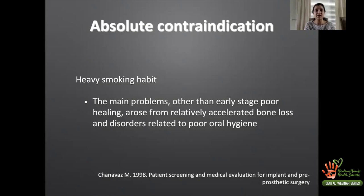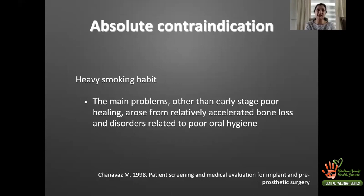Blood supply is a very important component of healing — it delivers nutrition to a healing site whether healing by primary or secondary intention. People who smoke have restricted blood supply to the site, leading to poor healing. In my practice, I assess how many cigarettes patients are smoking and have a candid conversation with them. Smoking will also appear as a relative contraindication where the habit is less severe — we'll circle back to that.